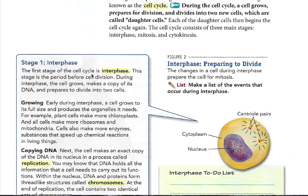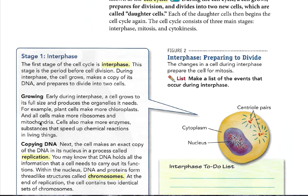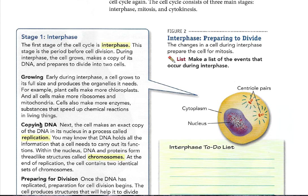Stage 1 is interphase. The first stage of the cell cycle is interphase, a period before cell division. During interphase, the cell grows, makes a copy of its DNA, and prepares to divide into two cells. Early during interphase, a cell grows to its full size and produces the organelles it needs. For example, plant cells make more chloroplasts, and all cells make more ribosomes and mitochondria. Cells also make more enzymes, substances that speed up chemical reactions in living things.